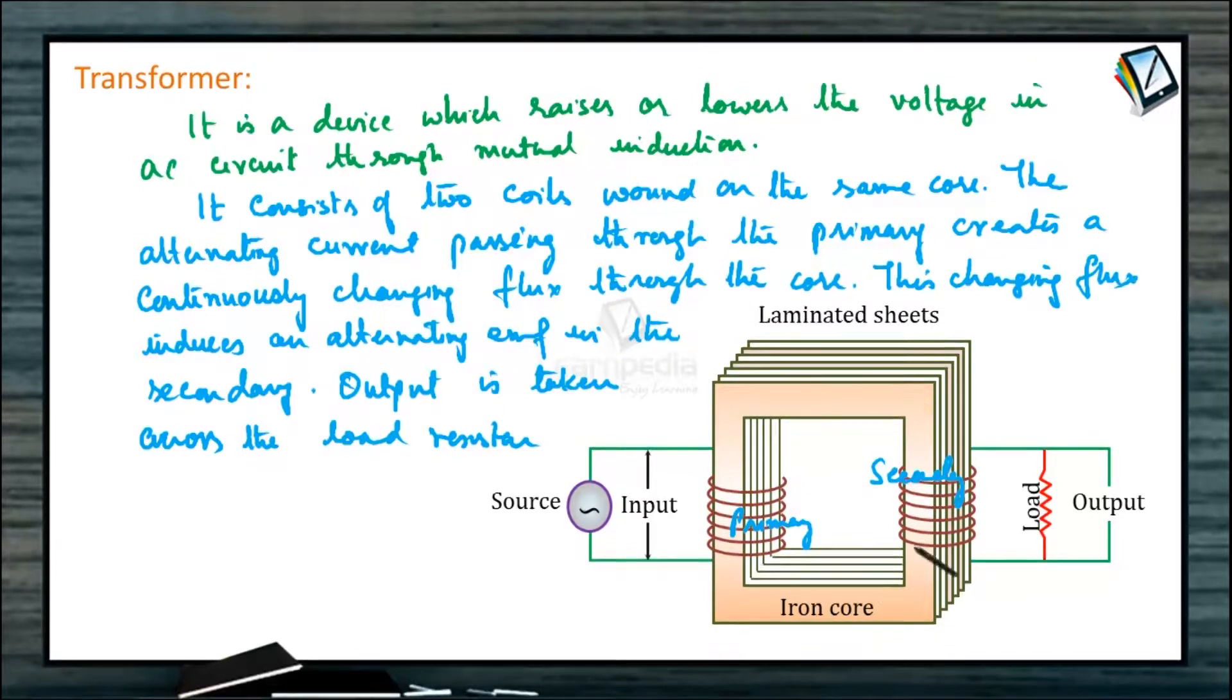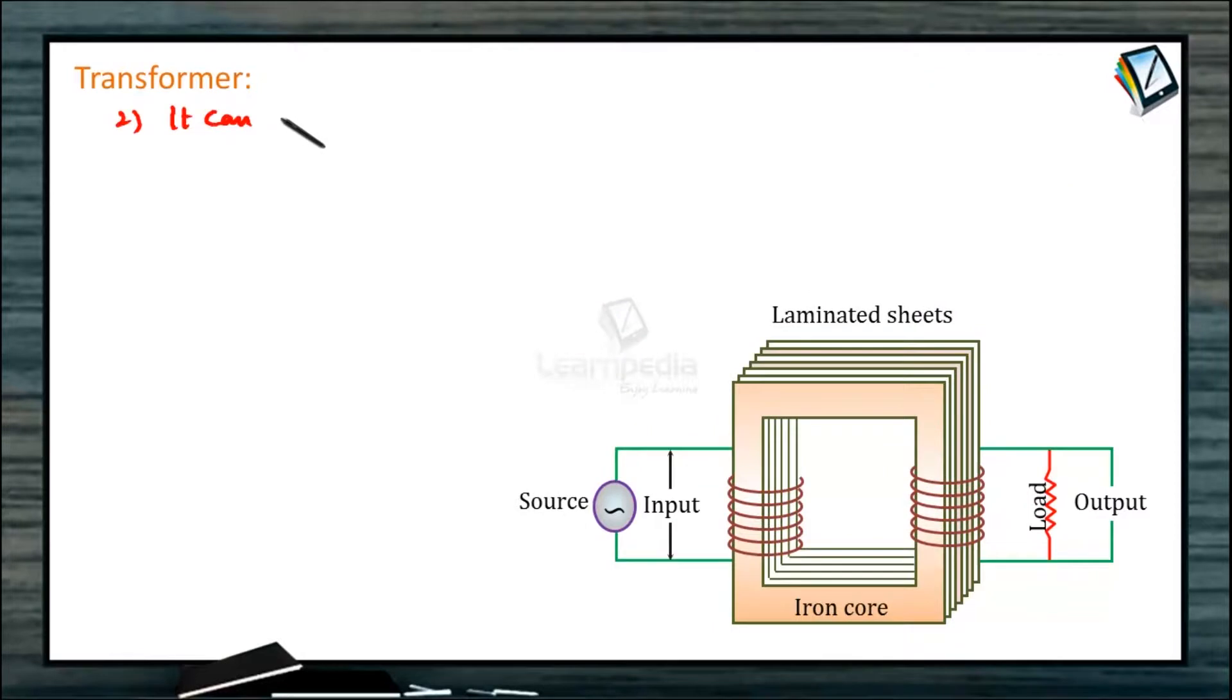These are laminated sheets to decrease the eddy current. We should note some points: Transformer works on only AC and not on DC. It can increase or decrease either voltage or current, but not both simultaneously. Transformer does not change the frequency of input AC.